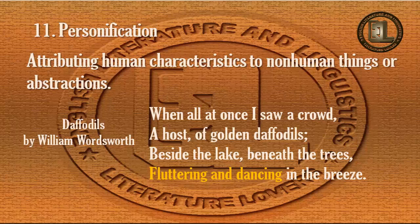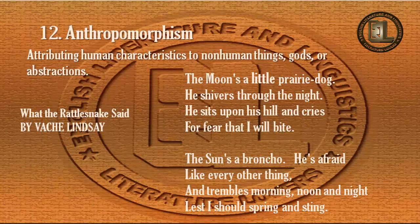The next term is anthropomorphism. What is anthropomorphism? It is also the attribution of human characteristics to non-human things, gods or goddesses, or abstractions. Consider these lines from the poem 'What the Rattlesnake Said' by Vachel Lindsay: 'The moon's a little prairie dog, he shivers through the night, he sits upon his hill and cries for fear that I will bite. The sun's a bronco, he is proud like every other thing, and trembles morning, noon, and night lest I should bring and sting.' In these lines the moon and the sun have been attributed with human characteristics.